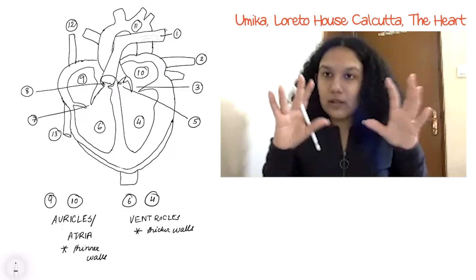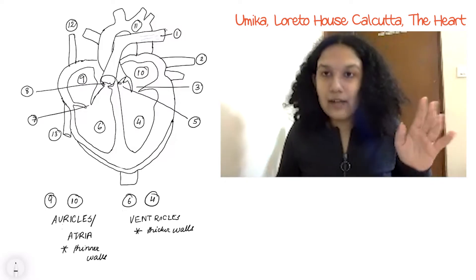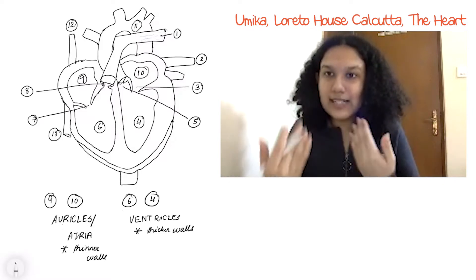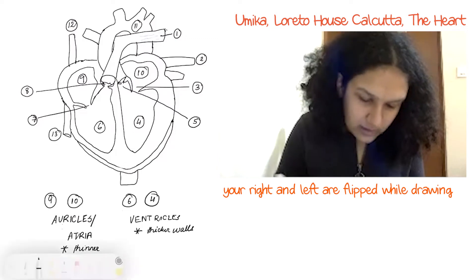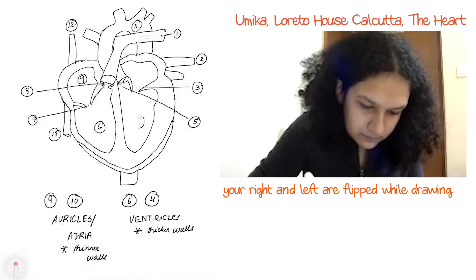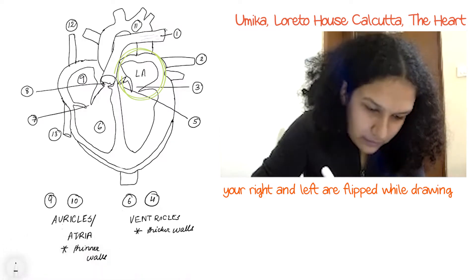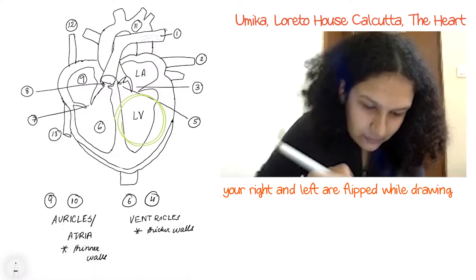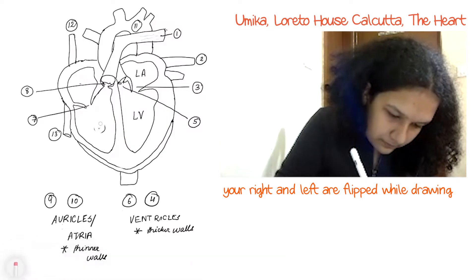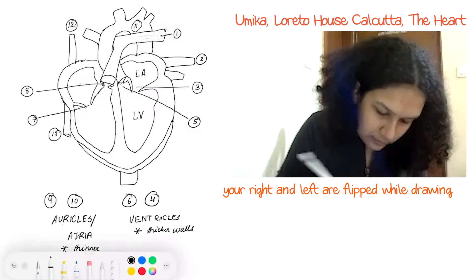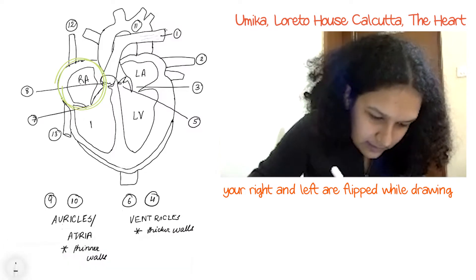When drawing the heart, it's important to understand that your right and left are completely flipped. So in the diagram, what appears on the left side is actually the left auricle and left ventricle, and what appears on the right becomes the right auricle and right ventricle — it gets flipped when drawing the heart.